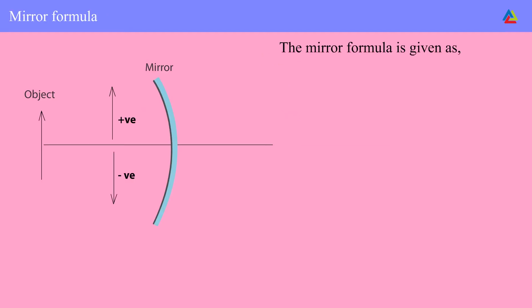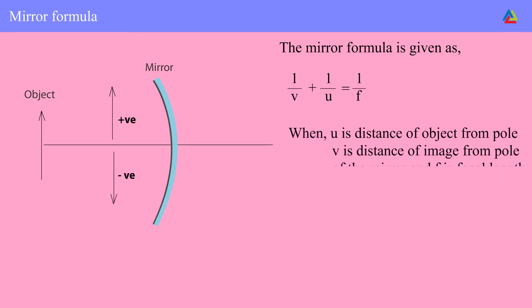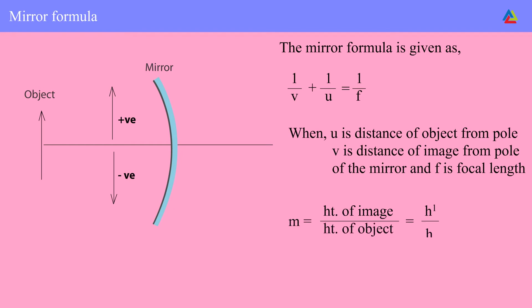The mirror formula is given by 1/v + 1/u = 1/f, where u is the distance of the object from the pole, v is the distance of the image from the pole, and f is the focal length. Magnification m is the ratio of the height of the image to the height of the object, and is also expressed as the negative ratio of image distance v to object distance u. A negative sign indicates the image is real; a positive sign indicates the image is virtual.